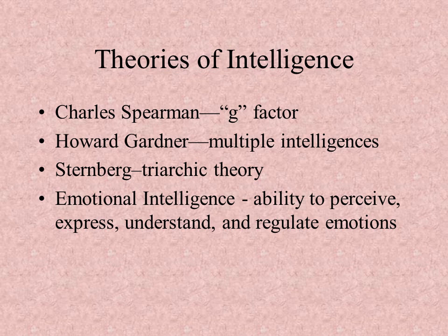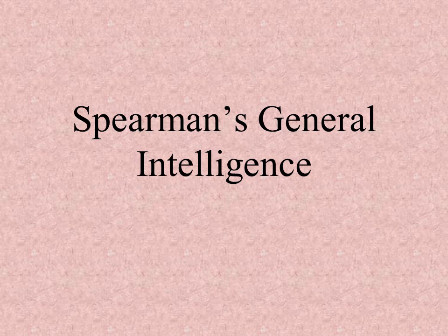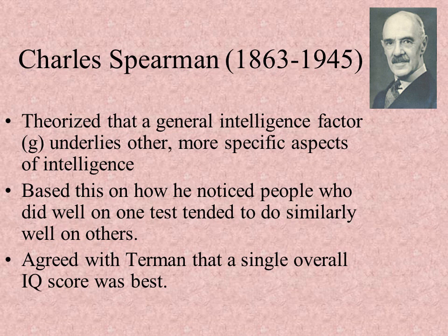We're also going to talk very briefly about emotional intelligence because it's a term you might come across. Spearman believed in a G factor — he thought that smart people were smart. If you look at people in your classes, most people are in advanced everything: the same people in advanced science, advanced math, advanced English. He felt that smart people were basically smart, and there was one general intelligence factor.